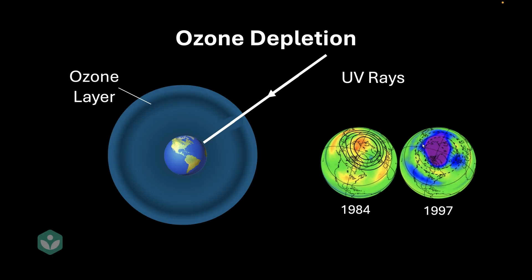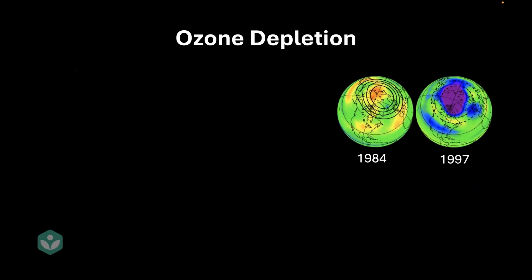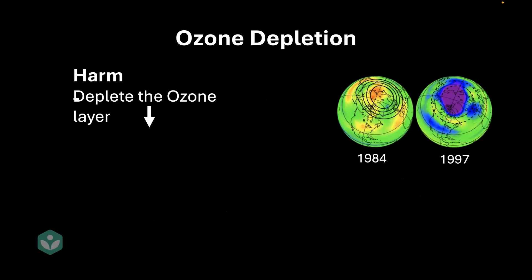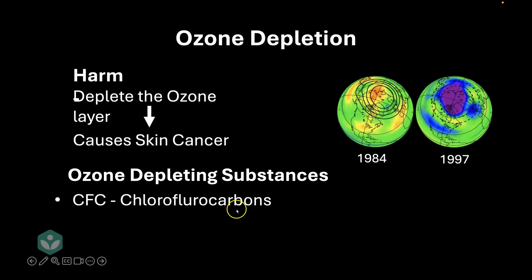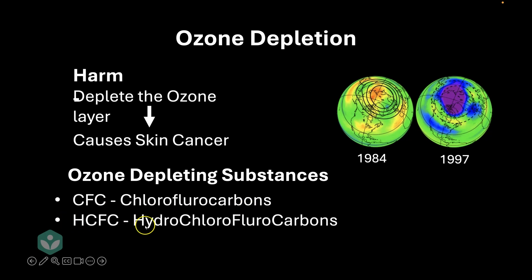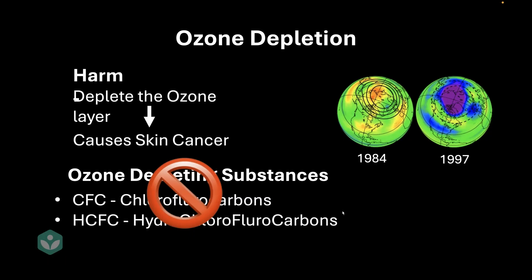This happened in the 90s because of certain chemicals being used in different products. These are called ozone depleting substances. There are mainly two types: CFCs or chlorofluorocarbons, and HCFCs or hydrochlorofluorocarbons. Thankfully, these are now banned because they were causing harm to the ozone layer.